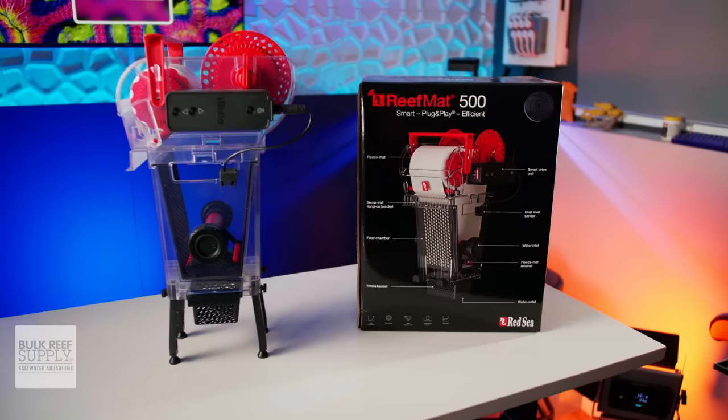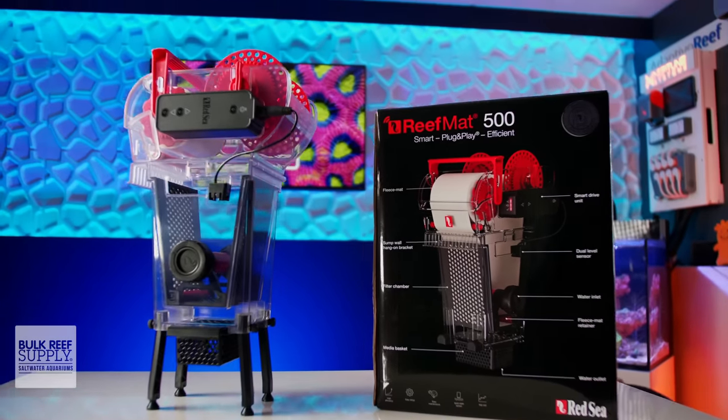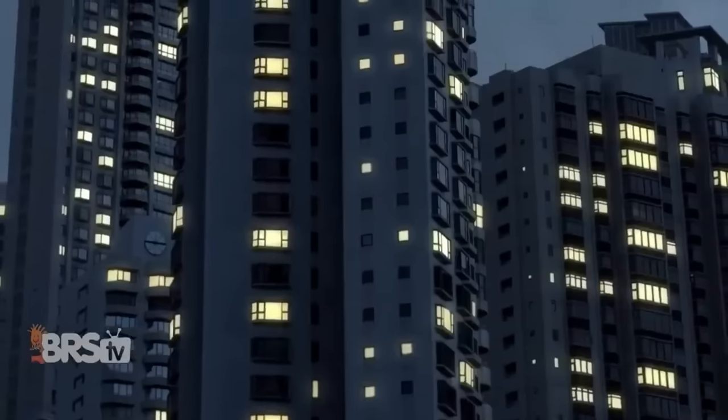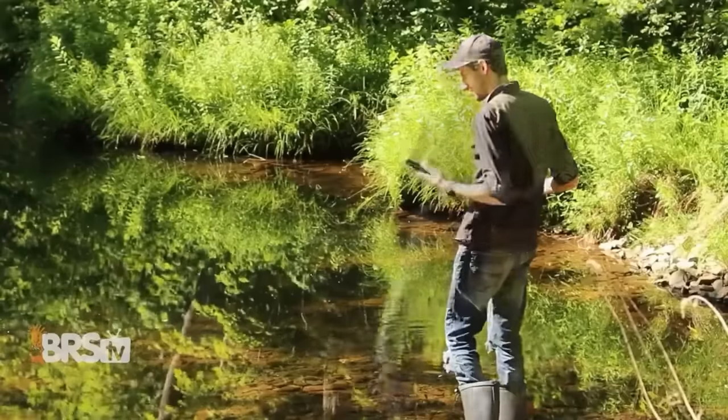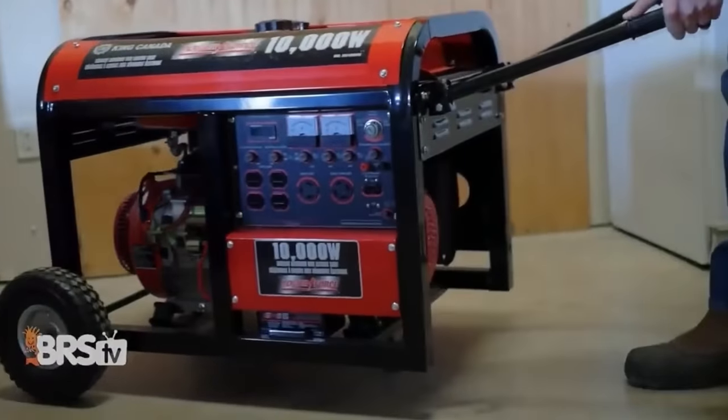The Reef Mat, like all of the other Reef Beat app control devices from Red Sea, will give your tank a heartbeat as well. If the Reef Mat loses connection to the cloud, like during a power outage, you'll get notified to your smart device, letting you know, giving you critical time to get back to your aquarium.